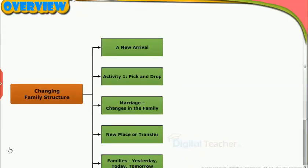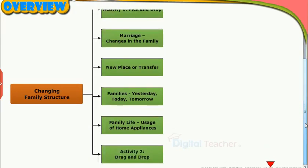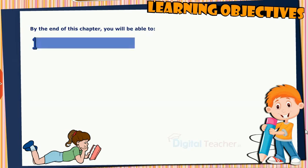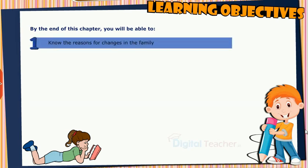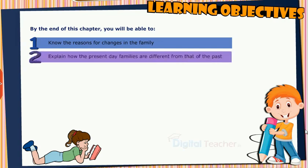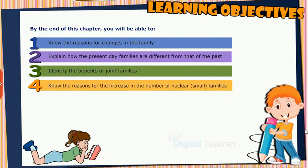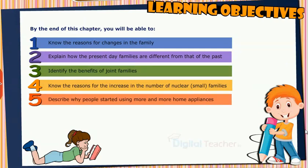This slide presents the overview of the chapter. By the end of this chapter, you will be able to: know the reasons for changes in the family; explain how present-day families are different from those of the past; identify the benefits of joint families; know the reasons for the increase in the number of nuclear or small families; and describe why people started using more and more home appliances.